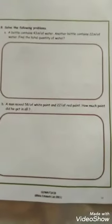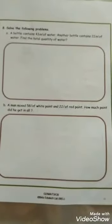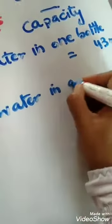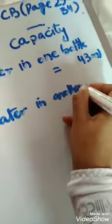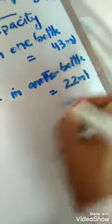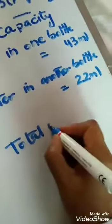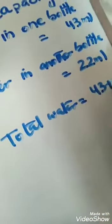Total means we have to do addition. So let me write here: water in one bottle is 43 ml, water in another bottle is 22 ml. So the total water is 43 ml plus 22 ml. So it will be like this.